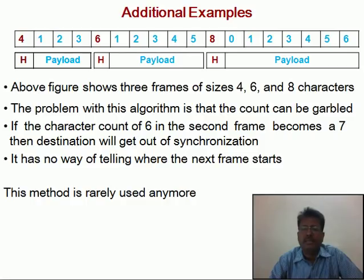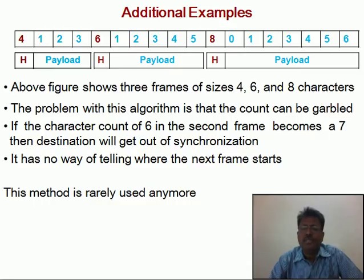Looking at additional examples, the figure shows 3 frames of sizes 4, 6, and 8 characters. The problem with this algorithm is that if any error occurs during transit and it changes the header field, it becomes very difficult for the receiver to know the end of the frame. For example, if the 2nd frame has value 6 in the header and this gets changed to 7 during transit, then the destination will lose synchronization. There is no way of telling where the next frame starts, and due to this reason, this method is rarely used anymore.